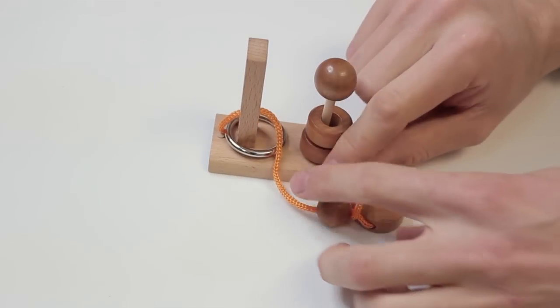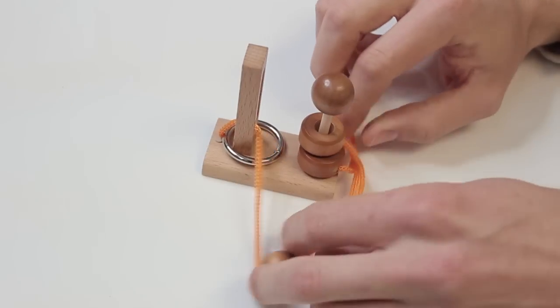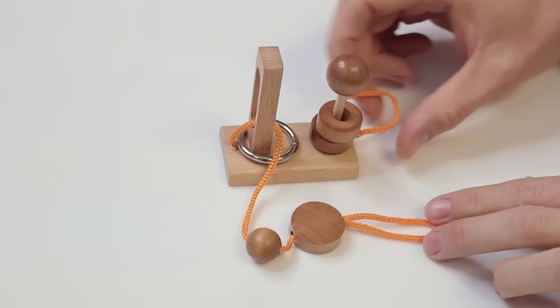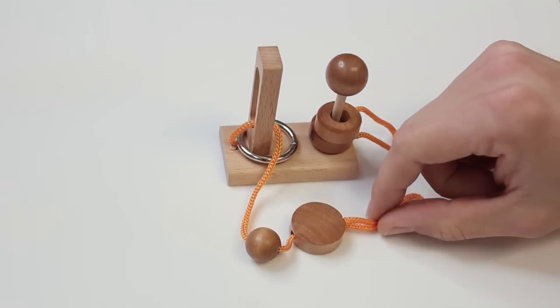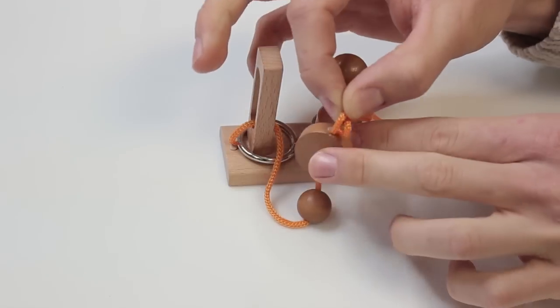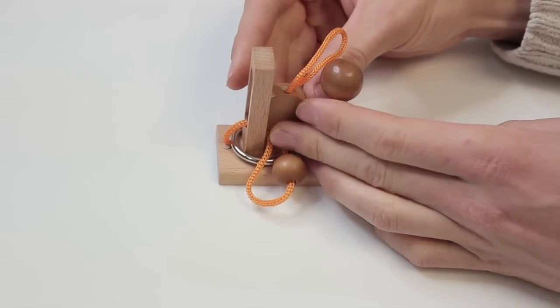And now you should be able to fully detach that side of the loop with the wooden disc. Now you take the wooden disc and put it through the slot in the post.